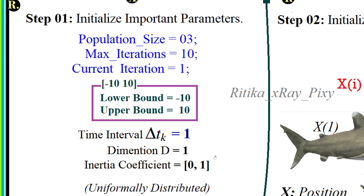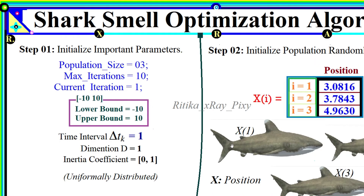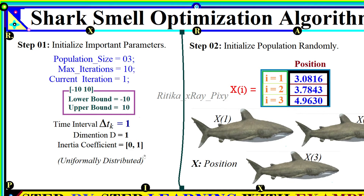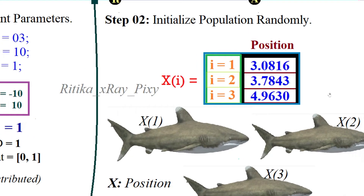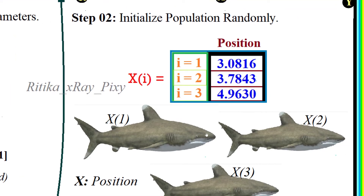The algorithm parameters are: maximum iterations = 10, current iteration = 1, bounds from -10 to 10, time interval = 1, dimension = 1, and the inertia coefficient is a uniformly distributed random value within the domain [0, 1]. The initial positions for the 3 agents in the search space are randomly distributed values — we can see the positions for the first shark x1, the second shark, and so on.